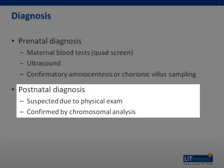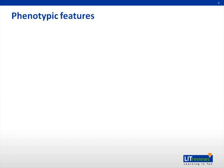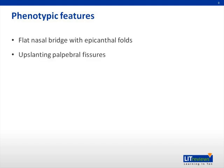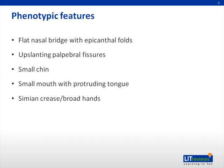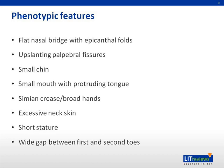Postnatal diagnosis usually occurs on the basis of physical examination with confirmation via chromosomal analysis. There are multiple physical characteristics common among individuals with Down syndrome, including a flat nasal bridge with epicanthal folds, up-slanting palpebral fissures, a small chin, a small mouth with a protruding tongue, a single palmar crease, excessive neck skin, short stature, a wide gap between the first and second toes, decreased muscle tone, and a poor Moro reflex.